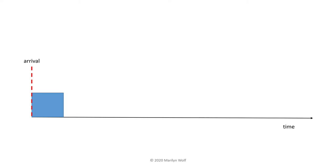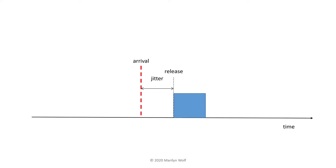In addition to periodic scheduling, tasks can also be initiated sporadically, either by outside events or by some internal computation. Sporadic tasks still need to meet deadlines. A sporadic task can start to execute at its arrival time and has to finish by its deadline. In general, a sporadic task won't be able to execute starting exactly at its arrival time. The difference between the release time of the task and its arrival time is known as jitter. We usually specify a maximum allowable jitter for a task.